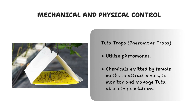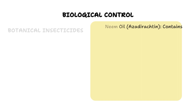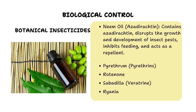For biological control, we have two categories: botanical insecticides and natural enemies. Among botanical insecticides — also called bio-insecticides — we have Rania, Sabadilla, Rotenone, and Pyrethrum, but today's focus is specifically on oils, particularly neem oil. Neem oil controls Tuta absoluta infestations by acting as a repellent, anti-feedant, and growth disruptor for larvae. It contains compounds that interfere with the insect's feeding and development, and also has anti-fungal properties that help protect plants from secondary infections caused by larval wounds.